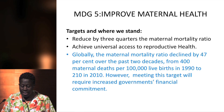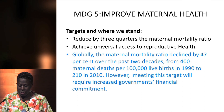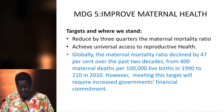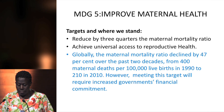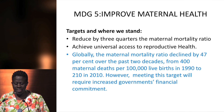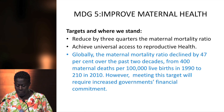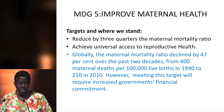MDG V was to improve maternal health. The target was to reduce by three-quarters the maternal mortality ratio and achieve universal access to reproductive health. Globally, the maternal mortality ratio declined by 47% over the past two decades, from 400 maternal deaths per 100,000 live births in 1990 to 210 in 2010. However, meeting this target will require more investments from national governments.